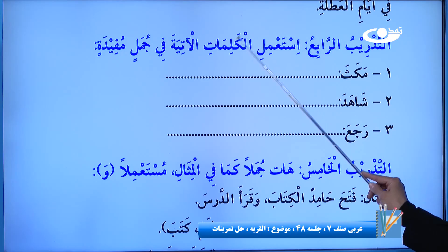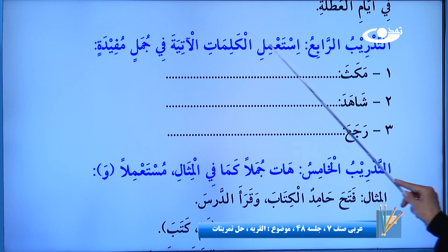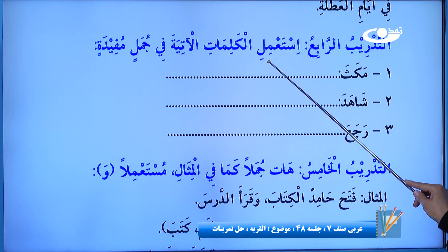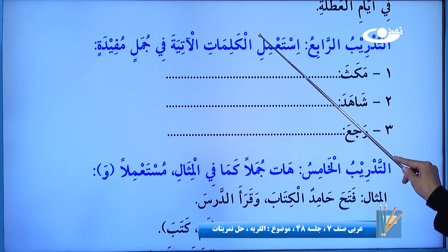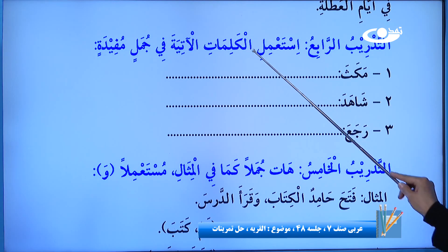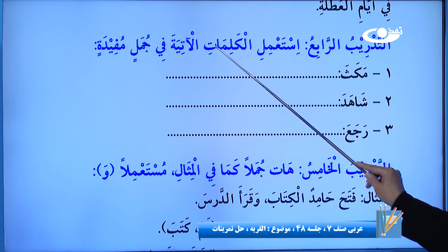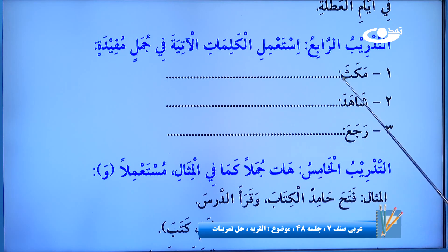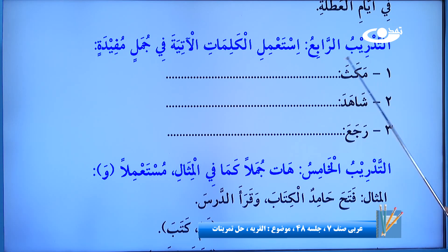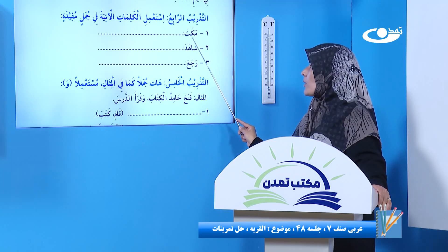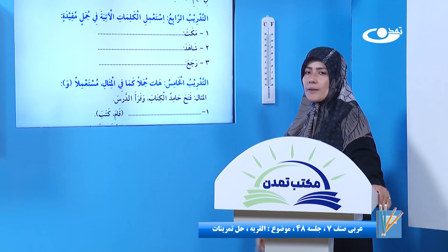استعمل کلمات الآتیه في جمل مفیده. استعمل فعل امر است. معنایش این است که کلمات زیر را به شکل امری استعمال کنین و در جملات مفیده بکار ببرین. در خانه حل کردیم. فعلی که ماضی مفرد غائب هست.